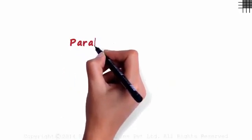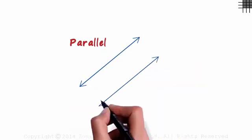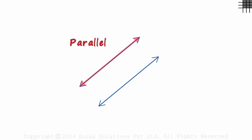How are the slopes of two parallel lines related? Take these two parallel lines for example. If the slope of this line is M1 and that of this one is M2, then how are M1 and M2 related?